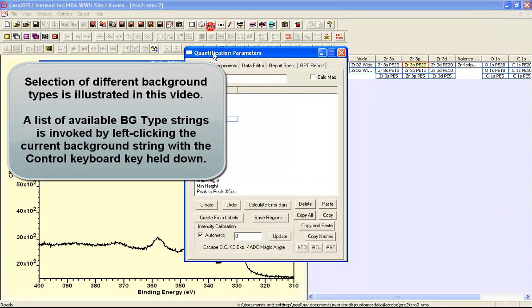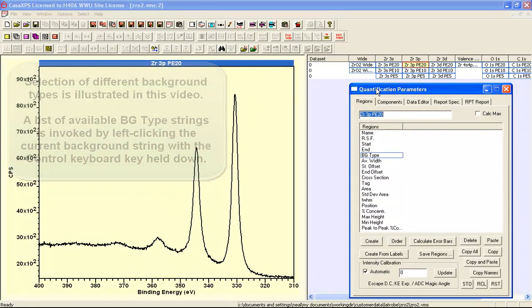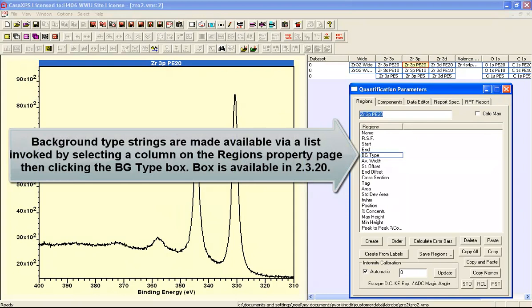In this video, we're going to look at different background types in CASXPS and how to define these background types, and we'll make use of a zirconium 3p doublet.